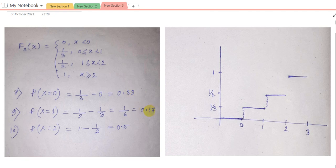And in question 10, P(X = 2), which is the jump from 2 to 3, and the value is 1 minus half equal to 0.5.